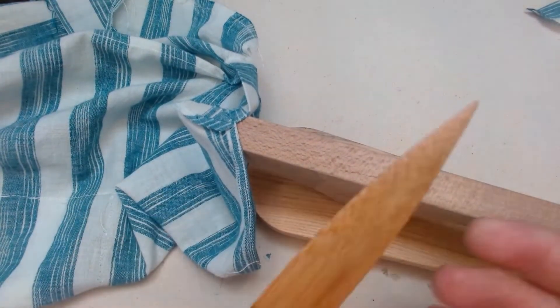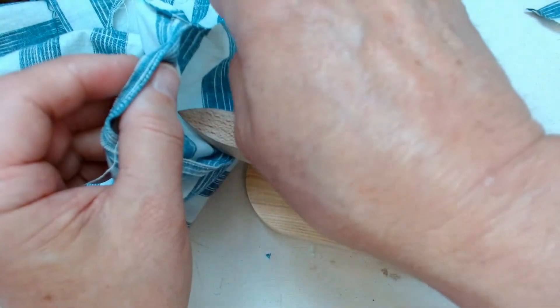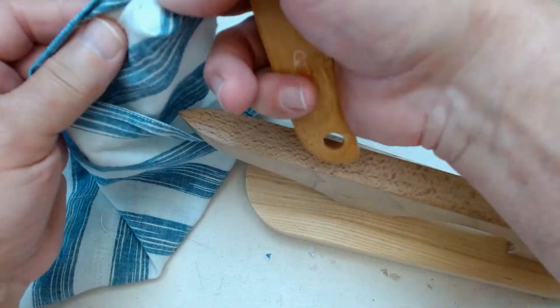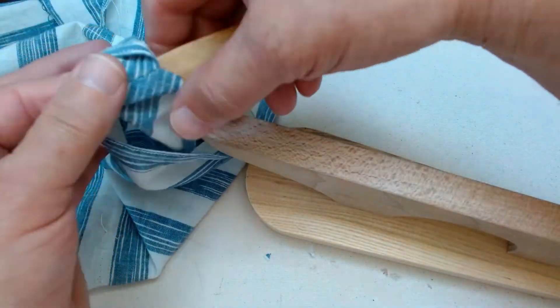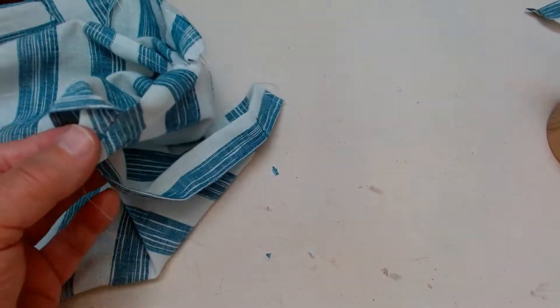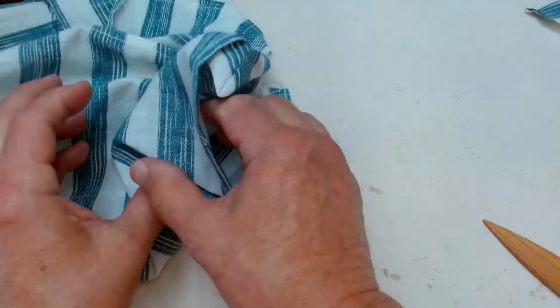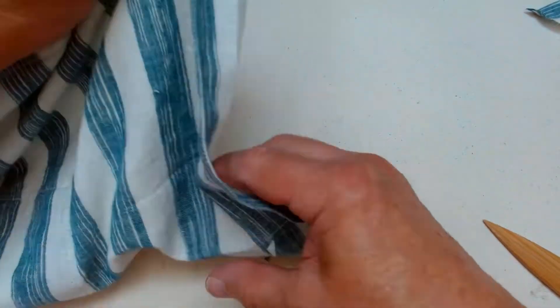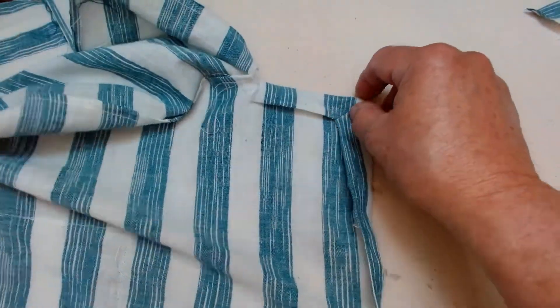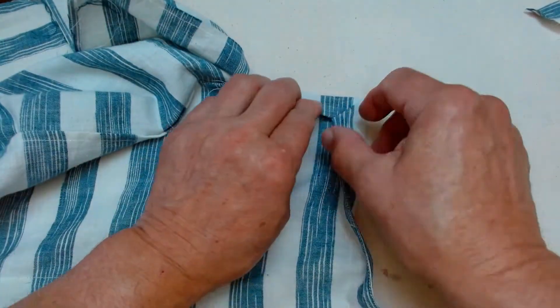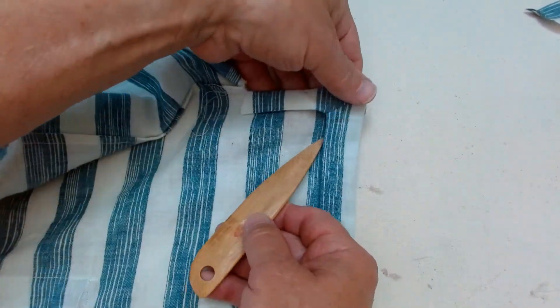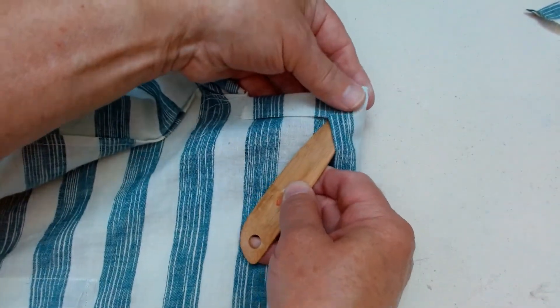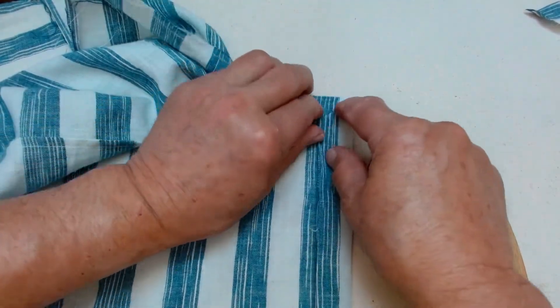I have a little bamboo point turner and you can just use it to turn this out. And our mitered corner is taking shape here.